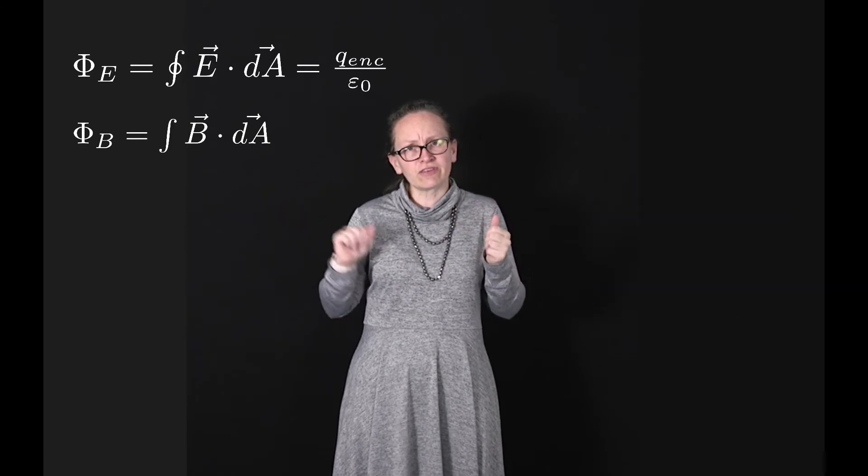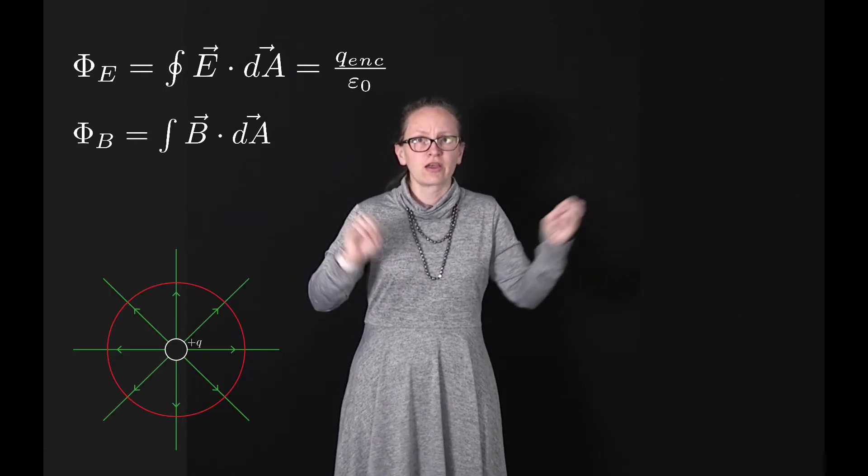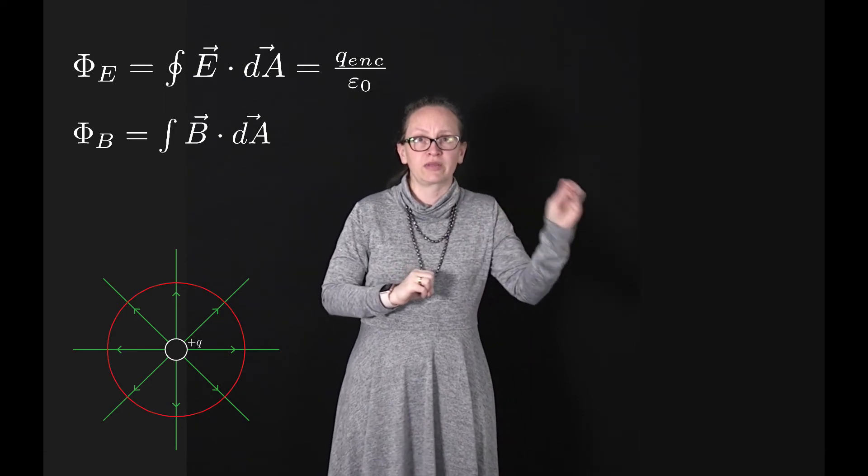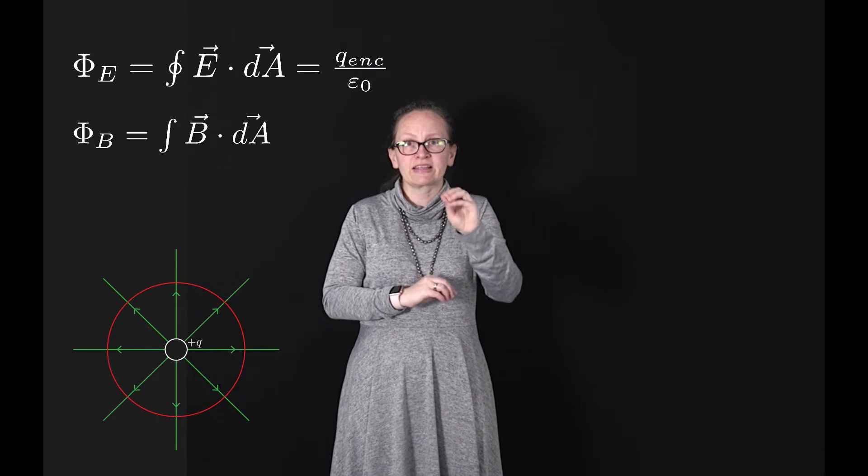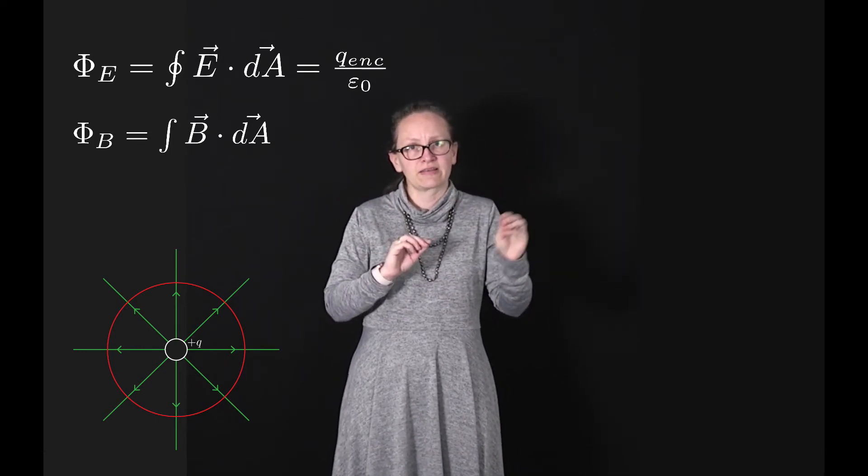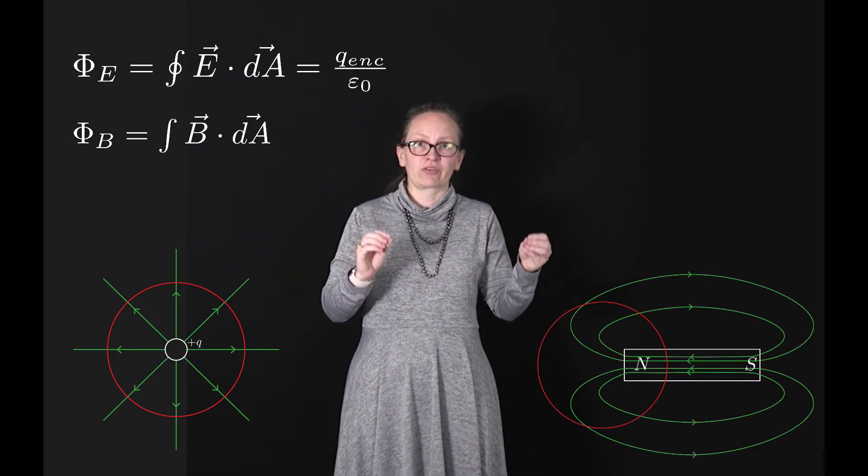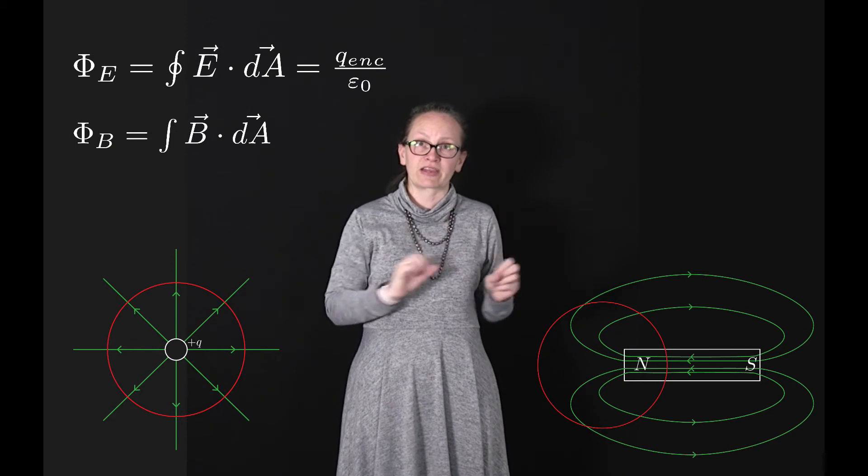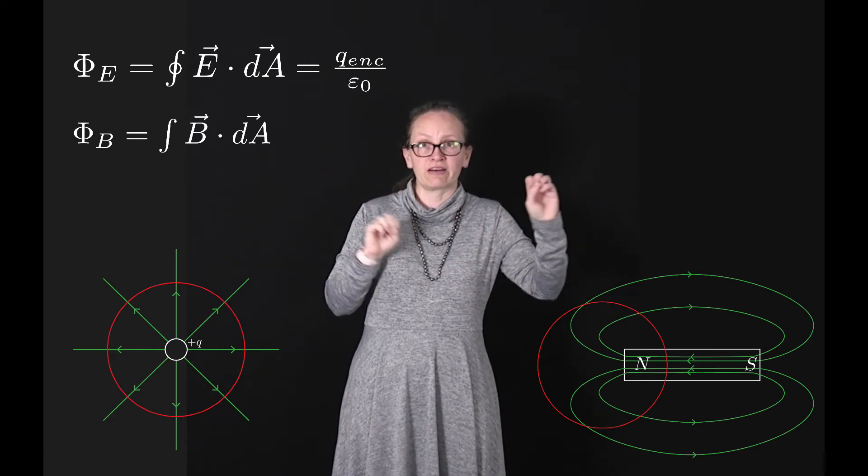Now in the electric field case, we saw that in order to have a non-zero flux through a surface, we had to place charge within the surface. And by placing charge through the surface, we had electric field lines that started or ended within that surface. Now in the magnetic field case, we can't have magnetic field lines that start or end somewhere, because we can't have a north pole by itself or a south pole by itself.